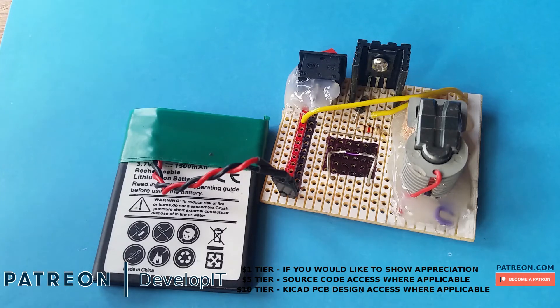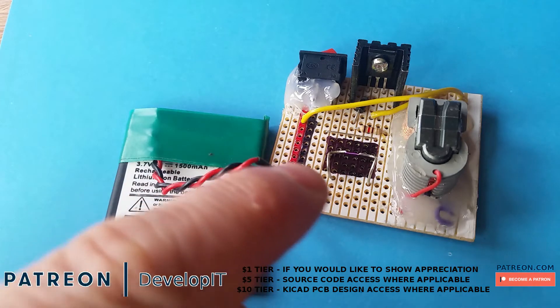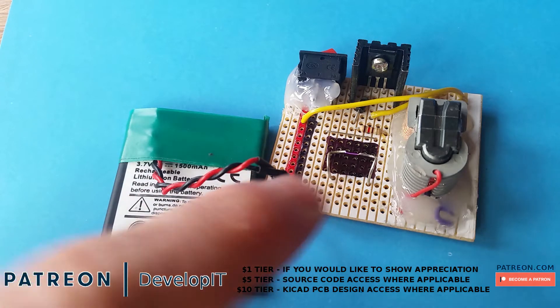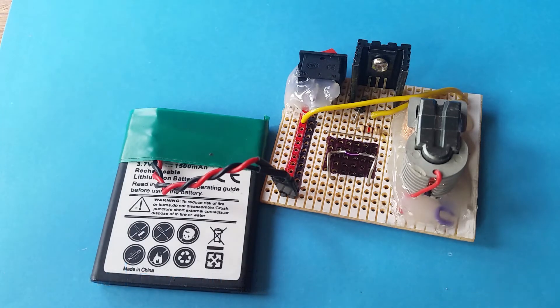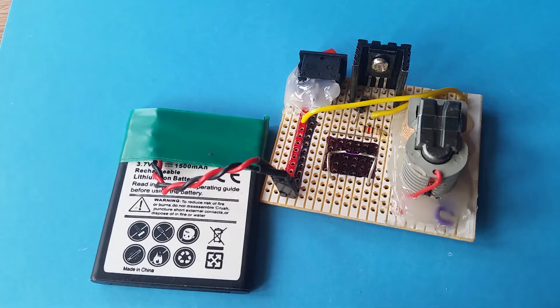This is a spark gap kit I got from eBay. It costs about £3.50. It generates this arc across these two electrodes. Now I'm not going to touch it because I think that would probably hurt quite a bit. But it's a nice little kit and I'll go into more detail about it.